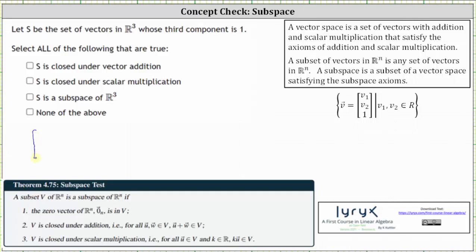Let's let the first vector be vector U with components U sub one, U sub two, one, and then plus vector V with components V sub one, V sub two, one. Notice both vectors are in the subset S because they are in R3 and have a third component of one.